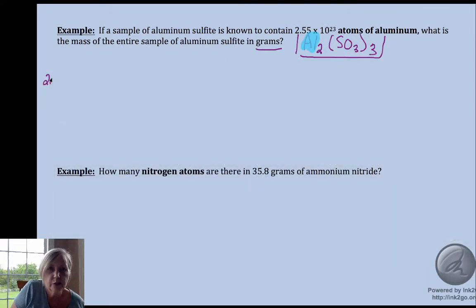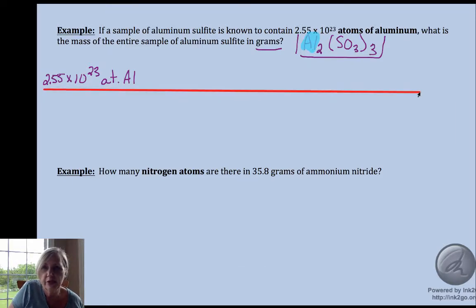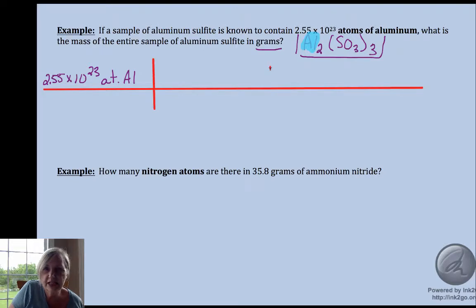I have aluminum, and I'm trying to find out how many grams of the whole substance I have. So 2.55 times 10 to the 23rd atoms of aluminum, I'm going to go to formula units. I'll do it one way in one of these problems and the other way in the next problem.